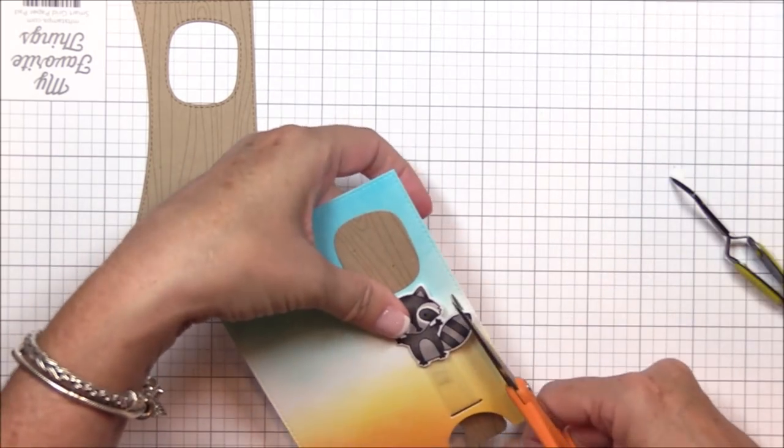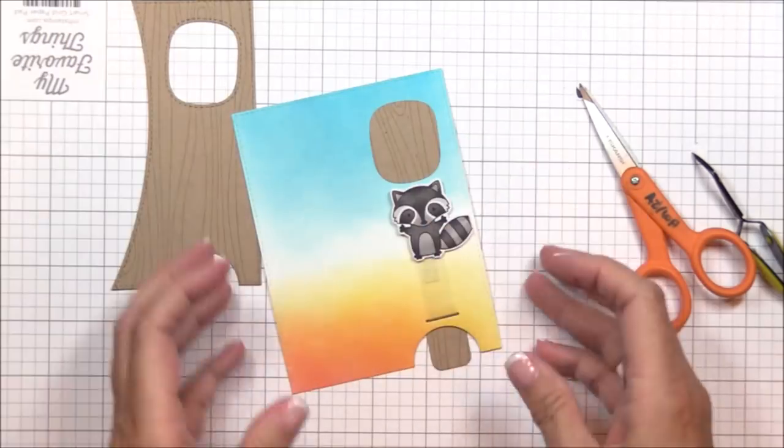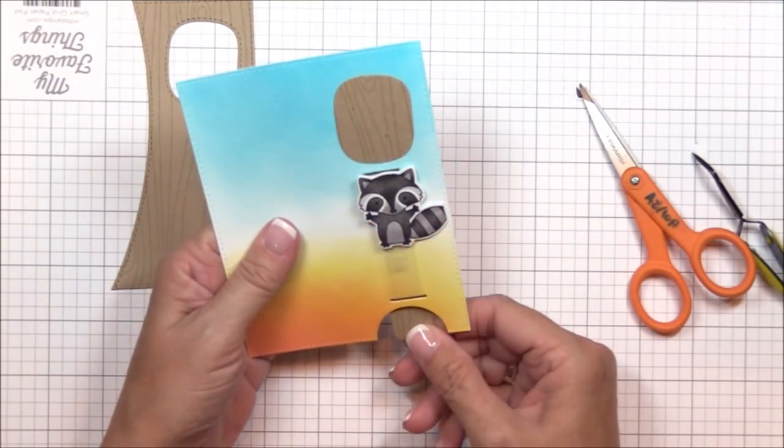I'm using my scissors to snip off the tip of the raccoon's tail, just in case it decides to pop out on the right side.